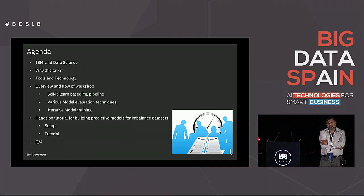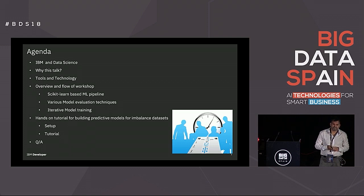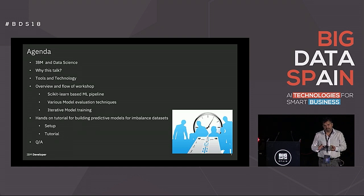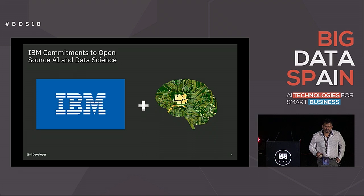First, how to build a scikit-based ML pipeline. Second, what are the various model evaluation techniques, especially when you have a data set which is highly imbalanced. And third, we're going to build a real model in a Jupyter notebook at the end — if we have time, we'll spend about five to ten minutes on that. So with that, let's move on to the slides.